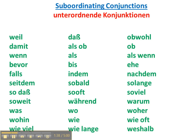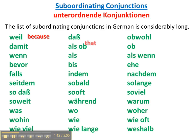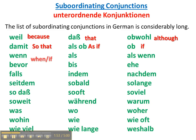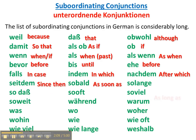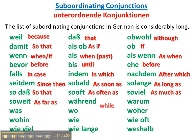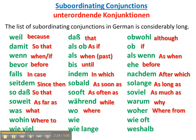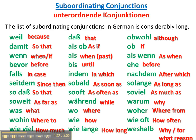Subordinating conjunctions — there are many more of these. Here is a fairly comprehensive list: weil, das, obwohl, damit, als ob, ob, wenn, als, als wenn, bevor, bis, er, falls, indem, nachdem, seitdem, sobald, solange, sodass, so oft, so viel, soweit, während, warum, was, wo, woher, wohin, wie, wie oft, wie viel, wie lange, weshalb. One thing to note is that if they start a sentence, they will be capitalized.